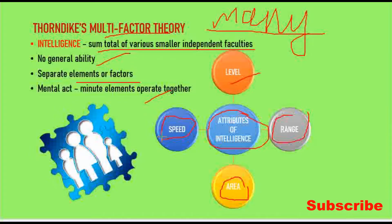Speed refers to how rapidly one responds to each item. So, summarizing the attributes of intelligence: Level is the level of difficulty, Range is the number of tasks, Area is the total situations, and this is the multi-factor theory.